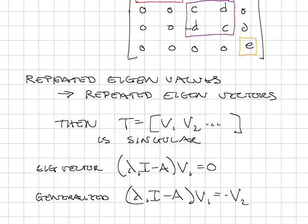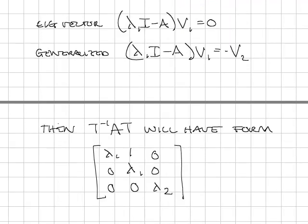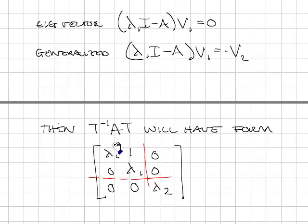What you'll find is that the corresponding diagonalized system takes a block diagonal form. For two repeated eigenvalues, using generalized eigenvectors places the repeated eigenvalue on the diagonal in a small block with a one in the off-diagonal position, indicating that the states are coupled because the eigenvalues are repeated. A third non-repeated eigenvalue appears as its own separate block. We are not going to do this calculation by hand — when we go to MATLAB, I'll show you how to do it there.